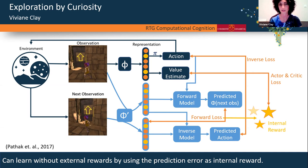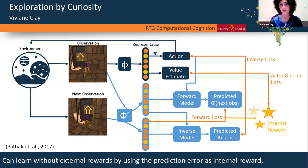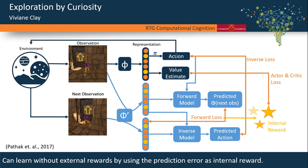It's a competing process: the dark blue network tries to increase the forward loss through its actions, and the light blue network tries to adapt to make better predictions again. So it's seeking novelty — or unpredictableness. This was first demonstrated on Super Mario, where the agent can solve levels without any rewards, just out of curiosity, because it wants to see new things.